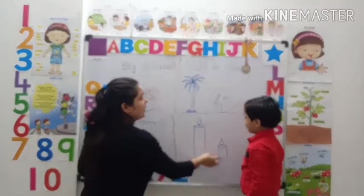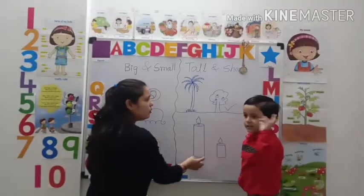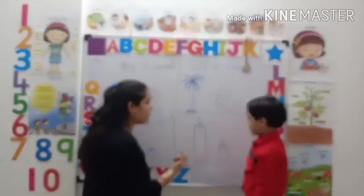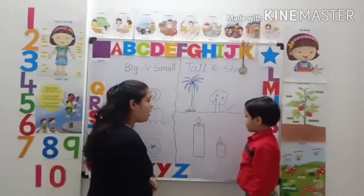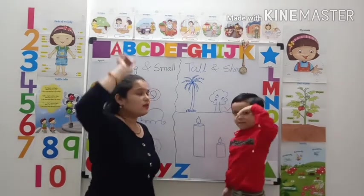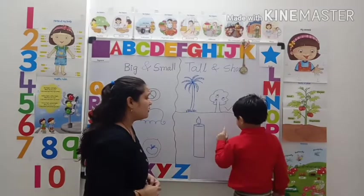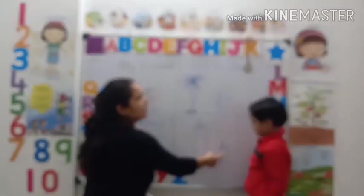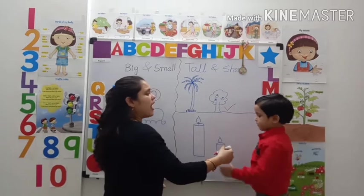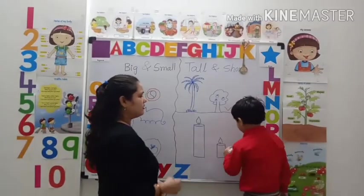Now there are two candles. How many candles are there? Two. Which one is tall? Yes, this candle is tall. And which one is short? Yes, this candle is short. So you have to take the short candle. Think.